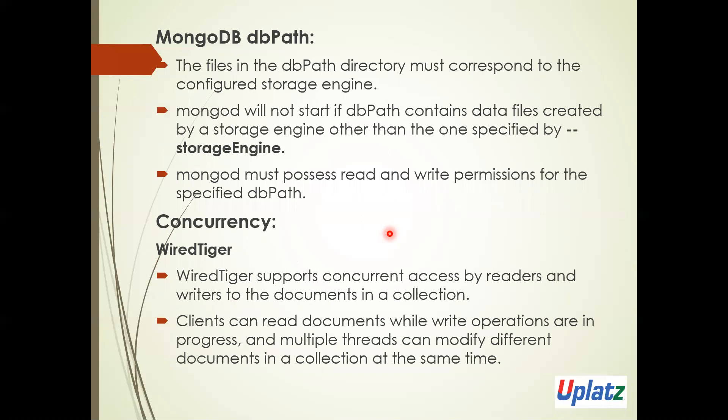Next is MongoDB data path. The files in the DB path directory must correspond to the configured storage engine. It will not start if the DB path contains a data file that was not created by the specified storage engine. MongoDB must possess read and write permission for that specified path. Next is the WiredTiger storage engine, which supports concurrent access by readers and writers to documents in a collection. The client can read documents while write operations are in progress, and multiple threads can modify different documents in the collection at the same time.